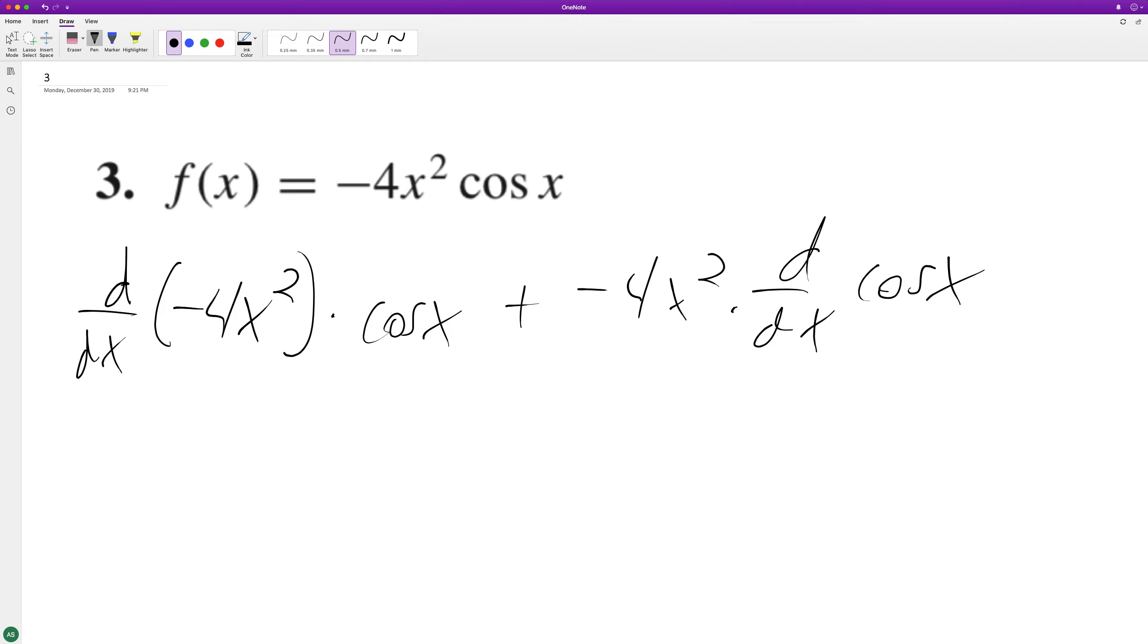So what will happen here now is the derivative of negative 4x squared is going to be negative 8x cosine x, and then we'll have our minus 4x squared.